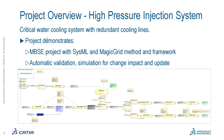This is a critical water cooling system with redundant cooling lines. As you can see, the solution architecture is here — redundant cooling lines, tank, pump, valves — providing water for the heat sinks. Here we see the project, which is in SysML using the Magic Grid method and framework, and from the stakeholder needs it translates through the logical and functional analysis to the solution architecture. We'll demonstrate automatic validation and simulation on the change.